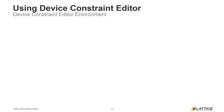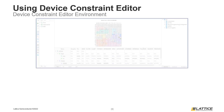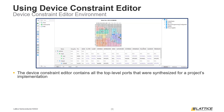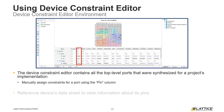Once Device Constraint Editor has opened, users should see something similar to the figure on the slide. The main view contains a list of all the top-level ports that were synthesized for a design. Each row in this window corresponds to a constraint for a port, and the name for a port can be seen in the leftmost column. To set a physical constraint for a port, set the pin you want to constrain it to using the Pin column. To better understand which pins to constrain a port to, refer to the data sheet for the device you plan on programming. For example, the input port called Start was constrained to pin K2.